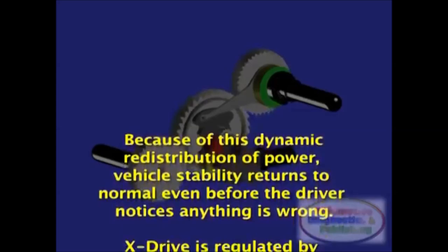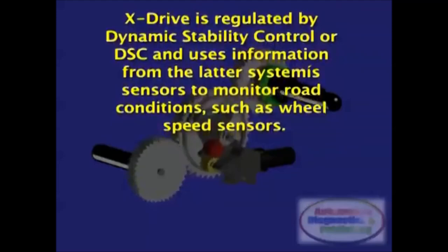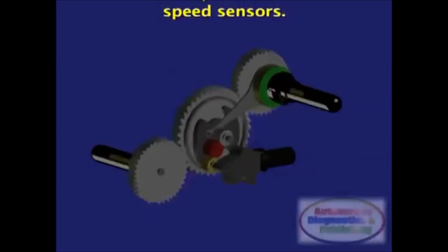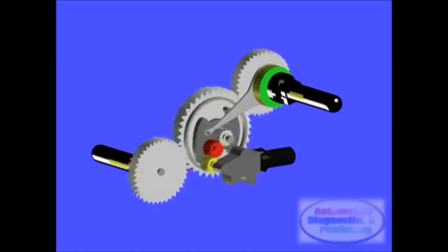Because of this dynamic redistribution of power, vehicle stability returns to normal even before the driver notices anything is wrong. X-Drive is regulated by Dynamic Stability Control or DSC and uses information from the latter system's sensors to monitor road conditions, such as wheel speed sensors. In addition, brake force courtesy of DSC is used when there is traction difference between the two sides of the vehicle and wheel spin is more likely to occur.